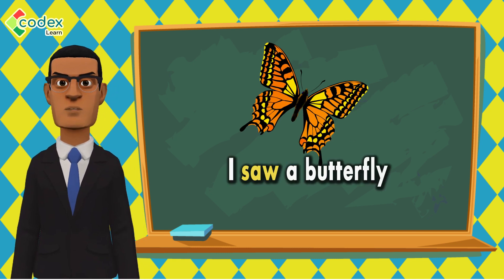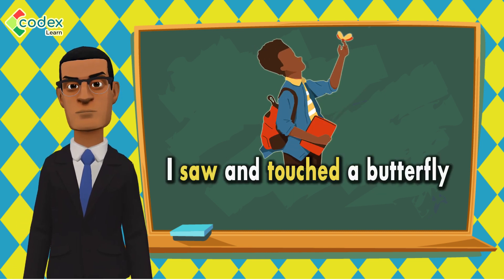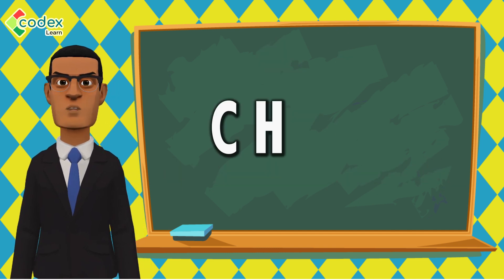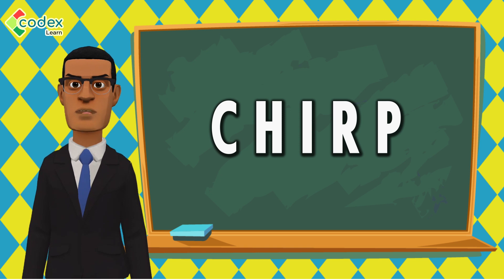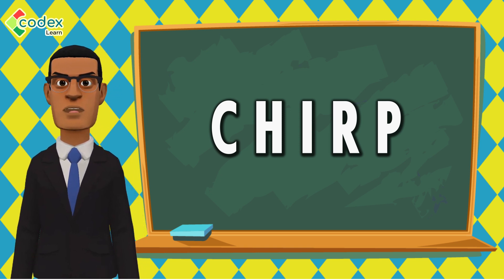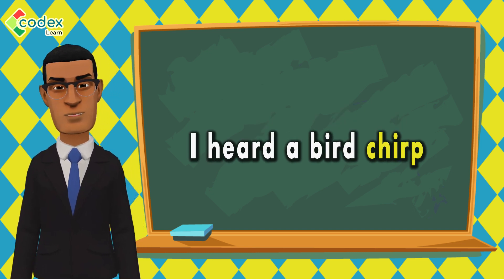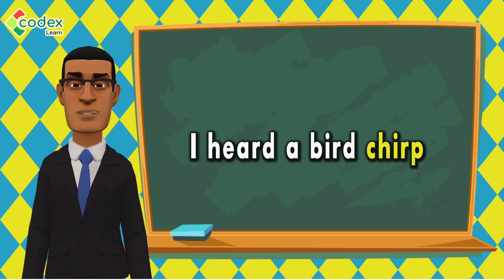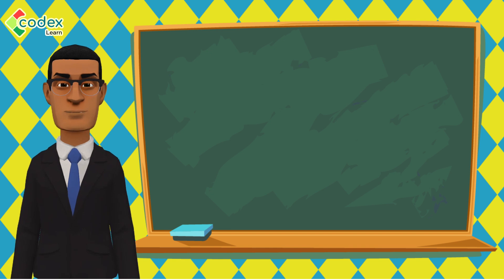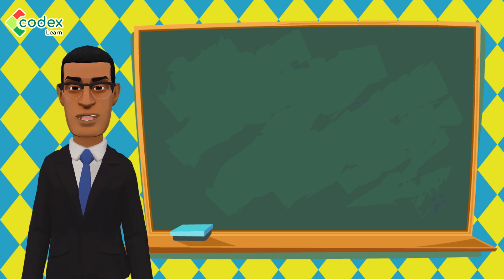For example, if you come across a butterfly, you can write: 'I saw a butterfly.' If you touch the butterfly's wings, you can write: 'I saw and touched a butterfly.' If you hear a bird chirp — chirp is spelled c-h-i-r-p, the sound that birds make — but you don't see the bird, you should write: 'I heard a bird chirp.' Now use your five senses to spot and name five things in the school environment. Are you ready? Let's go!